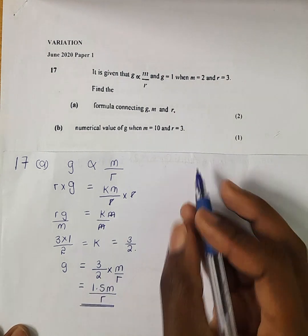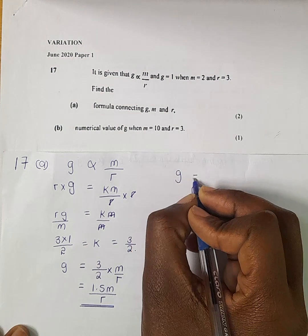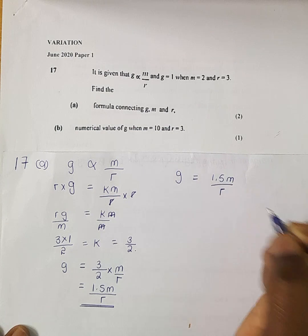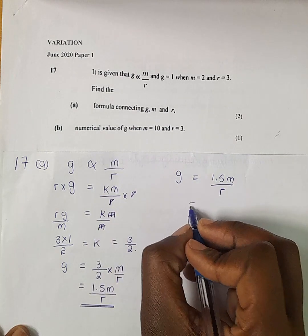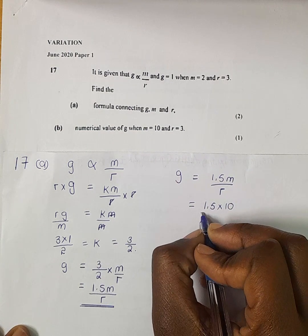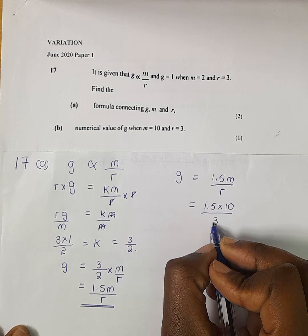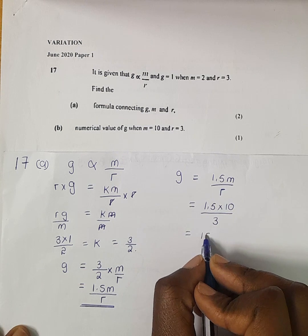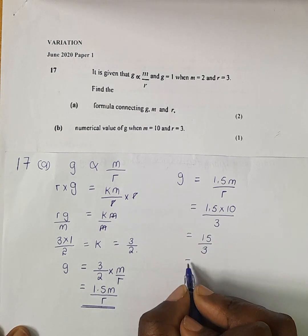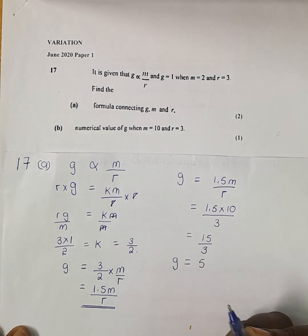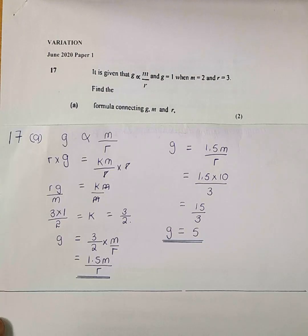We have the equation G equals 1.5M over R. We substitute: 1.5 times 10 over 3. 1.5 times 10 gives 15, and 15 divided by 3 gives 5. So the value of G equals 5. That was all about variation in June 2020.